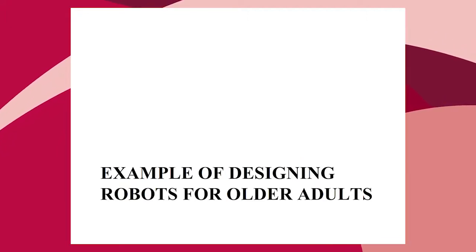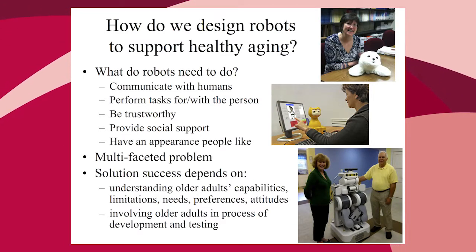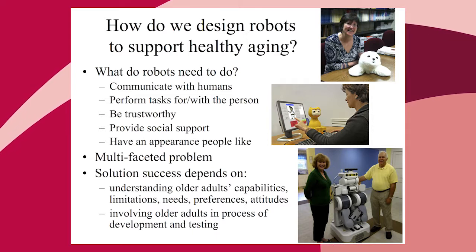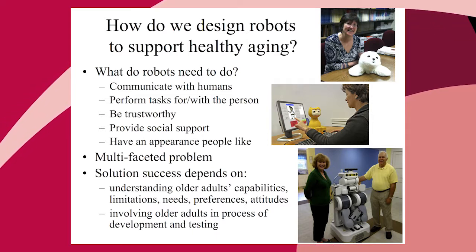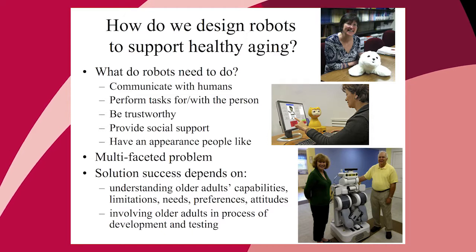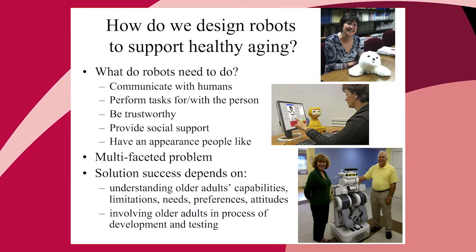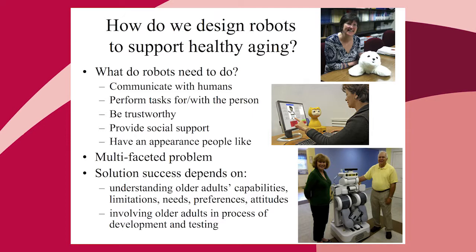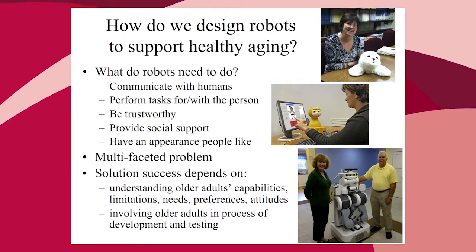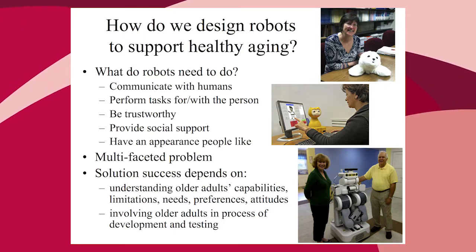Let me give some examples from our work designing robots for older adults. If you're going to design a robot to support healthy aging, it has to communicate with humans, perform tasks for or with the person, be trustworthy, provide social support, and have an appearance people like. This is a multi-faceted problem depending on understanding older adults' capabilities, limitations, needs, and preferences — and crucially, involving older adults in the development and testing.